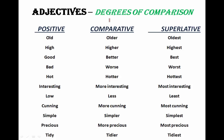We use comparative degree when we compare two things or persons. For example: my mother is older than my father. So basically I am comparing two persons. When there is a comparison between two people, we use the comparative degree.